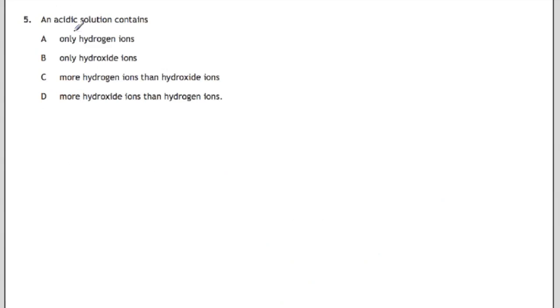Here this is a definition question. An acidic solution contains, and you know that it's to do with hydrogen ions so we can score out the hydroxide ion ones. We have a choice between only hydrogen ions or more hydrogen than hydroxide ions. Acidic solutions are in water and water has the dissociation into hydrogen and hydroxide, so there will be some hydroxide there. So your answer is C, more hydrogen ions than hydroxide ions.